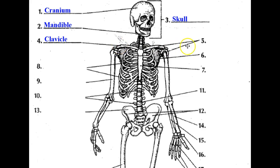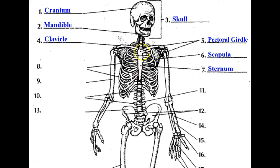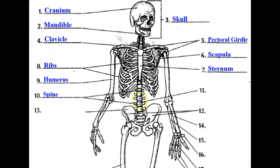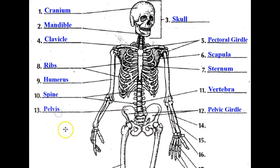The clavicle is your collarbone. The pectoral girdle encompasses the entire shoulder area. The scapula is the bone on the back of your shoulder. The sternum connects your ribcage down the middle of your chest. The ribs. The humerus is your upper arm. The spine, which supports your spinal cord. Vertebrae are the individual bones that make up your spine. The pelvic girdle is the entire set of bones in this area, which includes the pelvis.